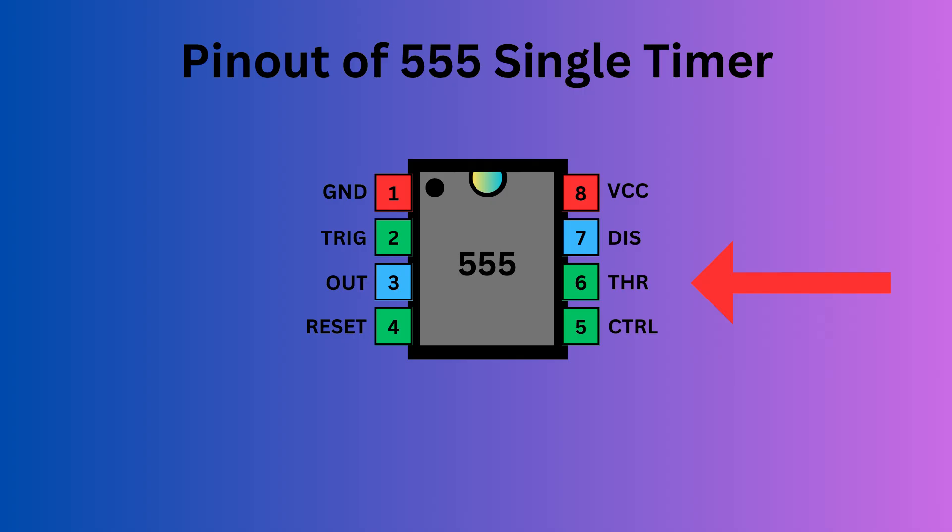Pin 6, the threshold pin, monitors the voltage of the capacitor in the circuit. Pin 7, the discharge pin, manages the timing capacitor's charge and discharge cycle. Pin 8, known as VCC, supplies power to the IC.